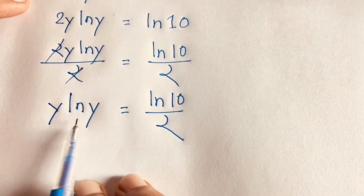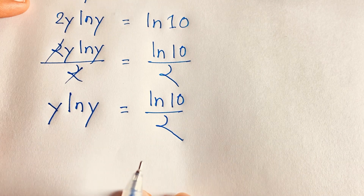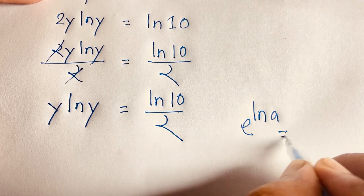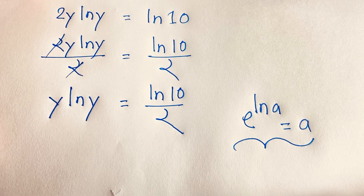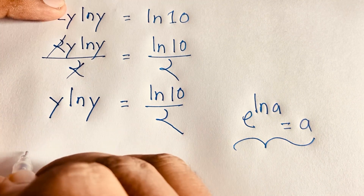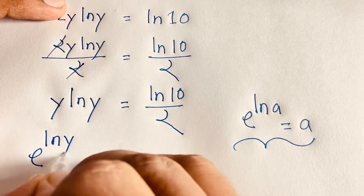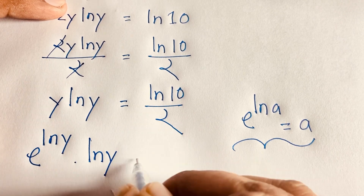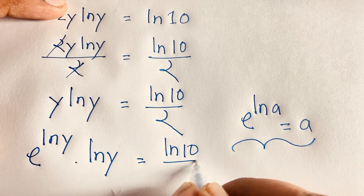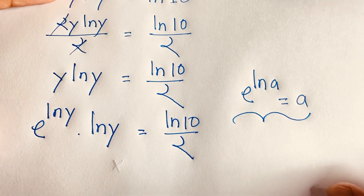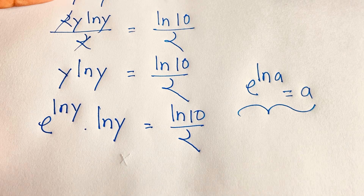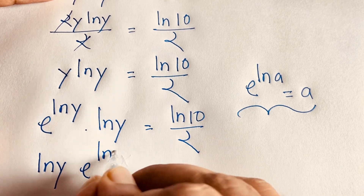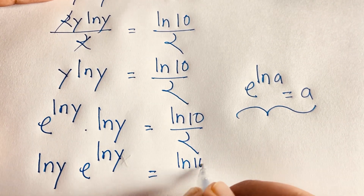So we find that y·ln(y) = ln(10)/2. Now we know that e^(ln a) = a. Using this rule, I can say y = e^(ln y). So the equation becomes ln(y)·e^(ln y) = ln(10)/2.